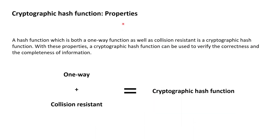In order for a hash function to be useful for cryptography as a tool to allow the verification of the correctness and completeness of information, a hash function would actually need to be injective and uniquely map inputs to hash values such that no two different inputs would have the same hash value. As the input domain is much larger than the domain of hash values, this uniqueness is actually impossible to realize, and instead one requires that it must be merely difficult — not impossible — to find different inputs that would be mapped to the same hash value.